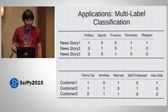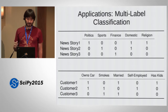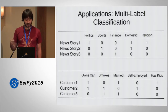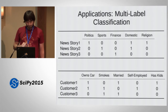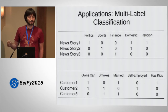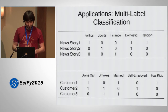Or say you have a customer base and you want to predict for each customer some attributes: do they own a car, do they smoke, are they married, self-employed, or have kids? Again, these are not exclusive classes. Multiple of these could apply to one of your users.